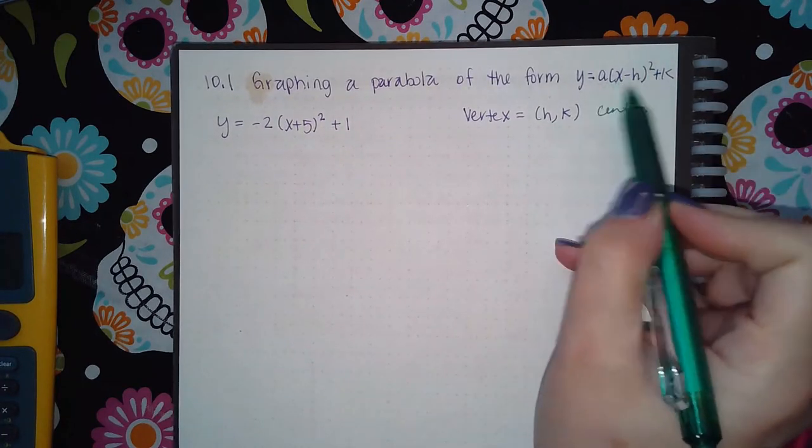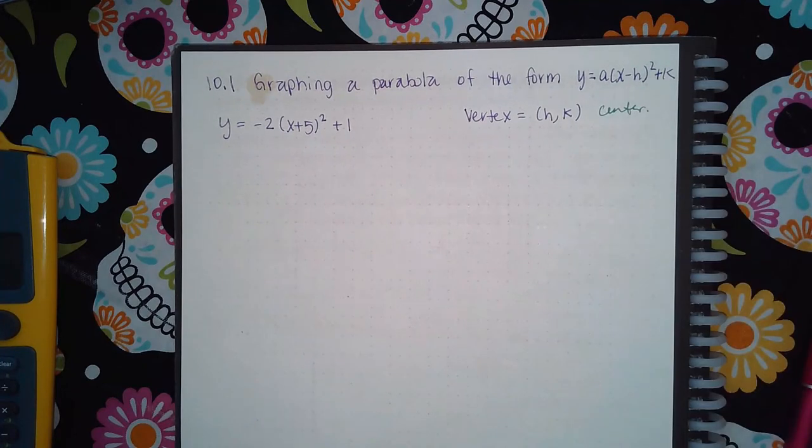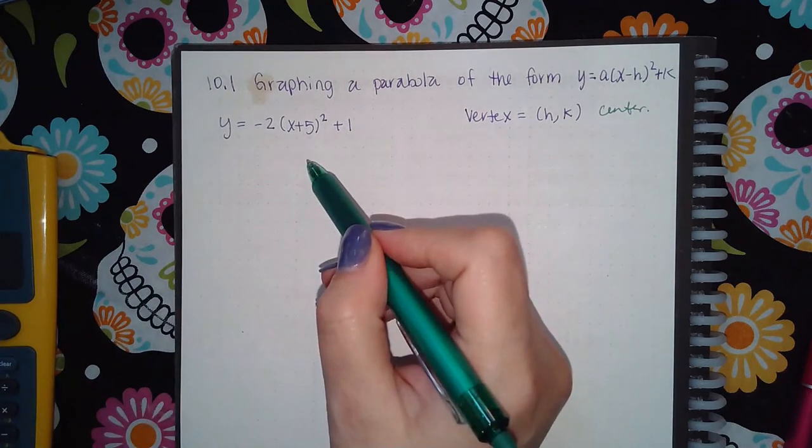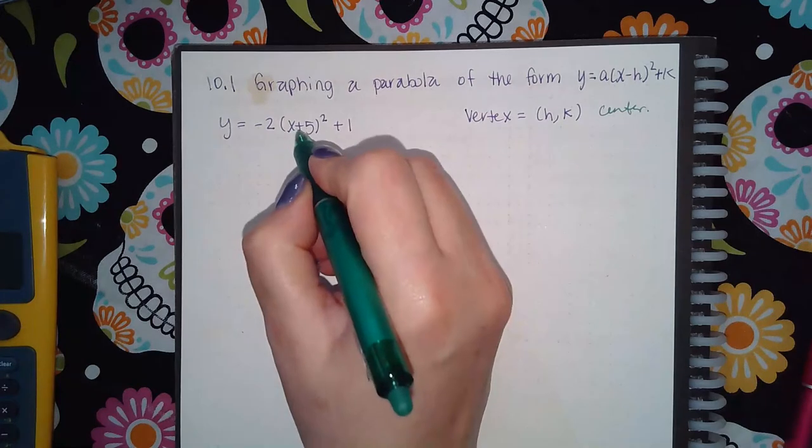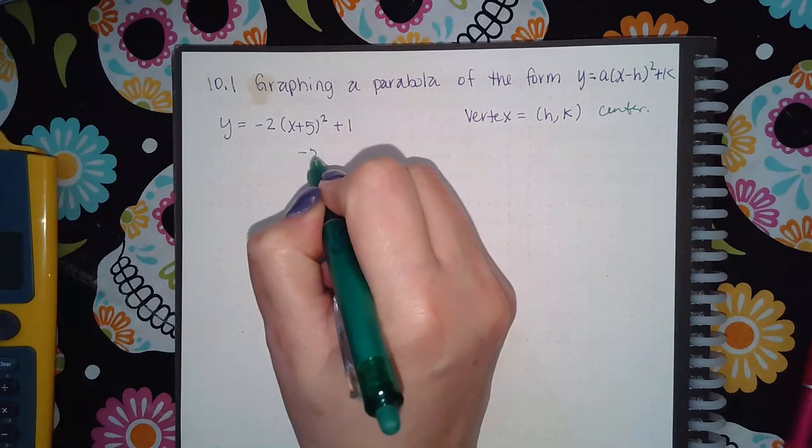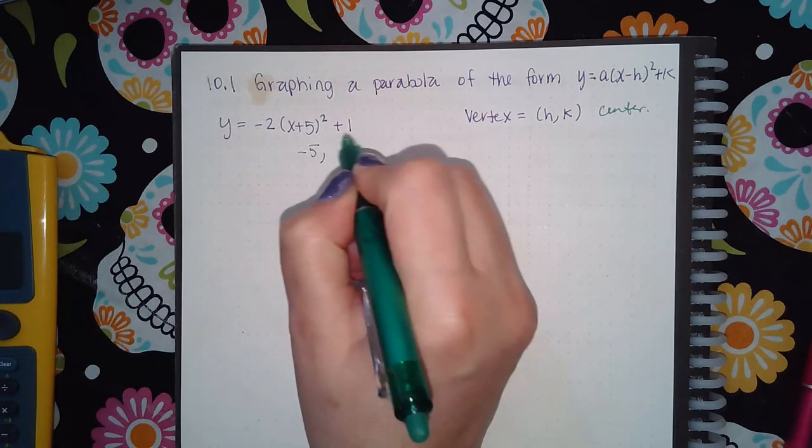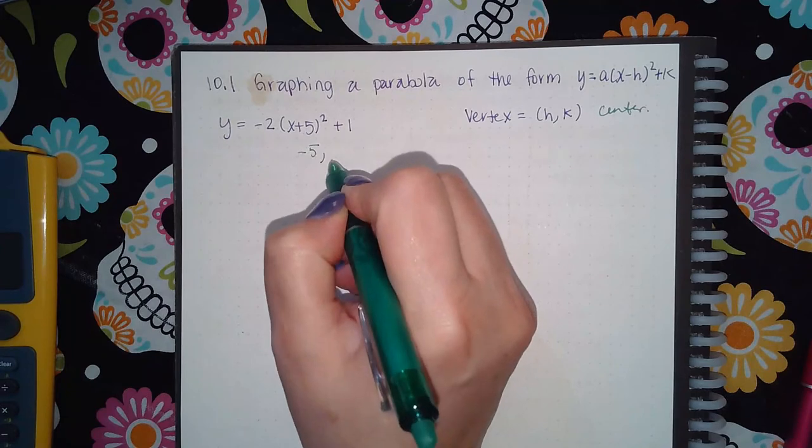So, for the vertex, when it's in this form, it's literally just picking out the information. Now just like the transformations, you always take the opposite of what's inside the basic function. So when I take this out, it's actually going to be negative 5, and when it's outside the basic function, you always just keep the same sign.